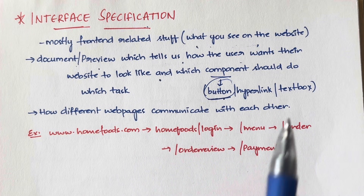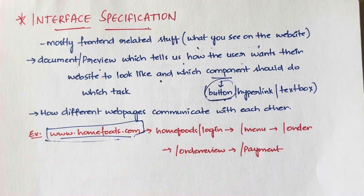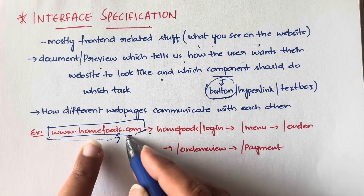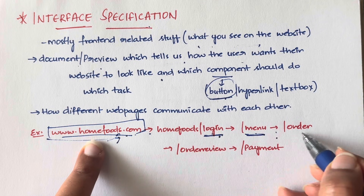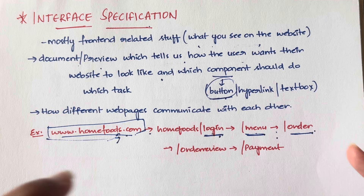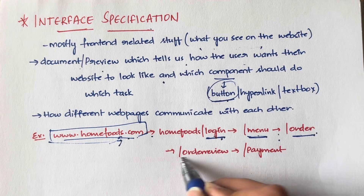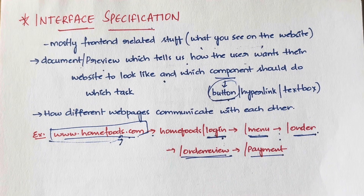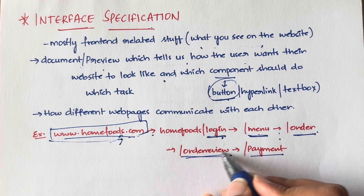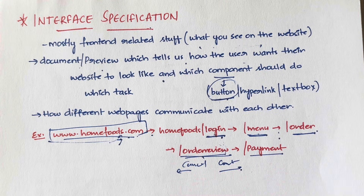It also specifies how different web pages communicate and navigate with each other. For example, taking the Home Foods business from the previous video: you start at the main home page, which has a login option. Once you log in, you go to the menu page, where you have orders. Once you click confirm or continue, you go to the order review page. After reviewing, you click confirm and go to the payment page. It also specifies what happens if you click Cancel versus Continue at each step.